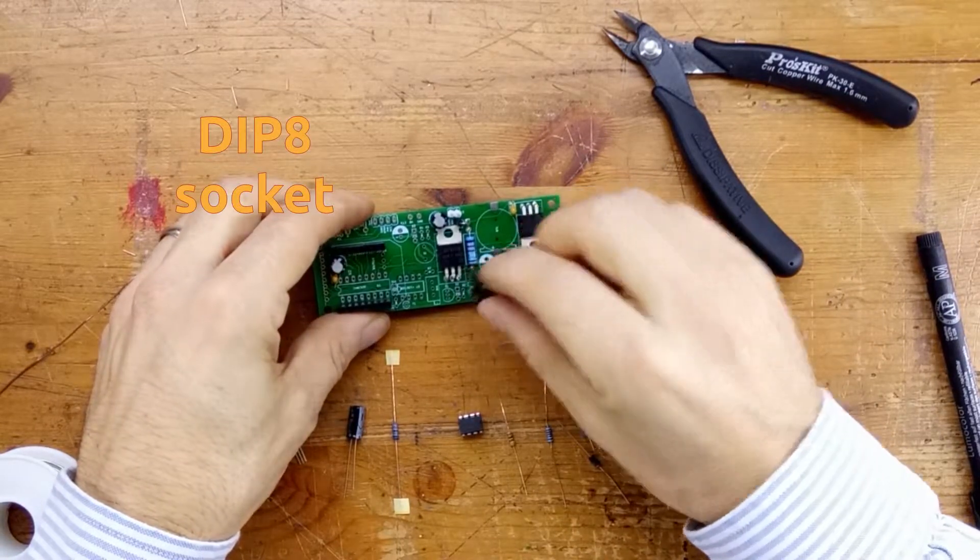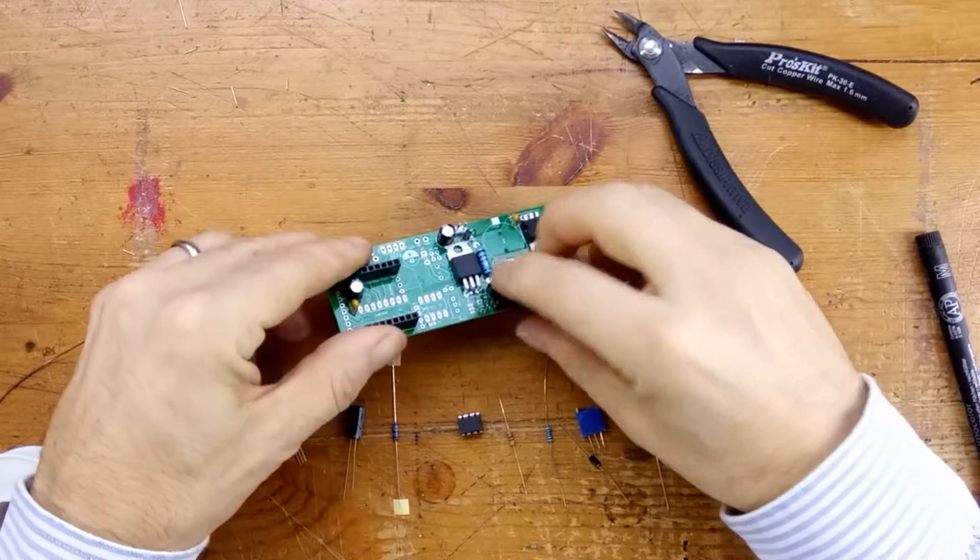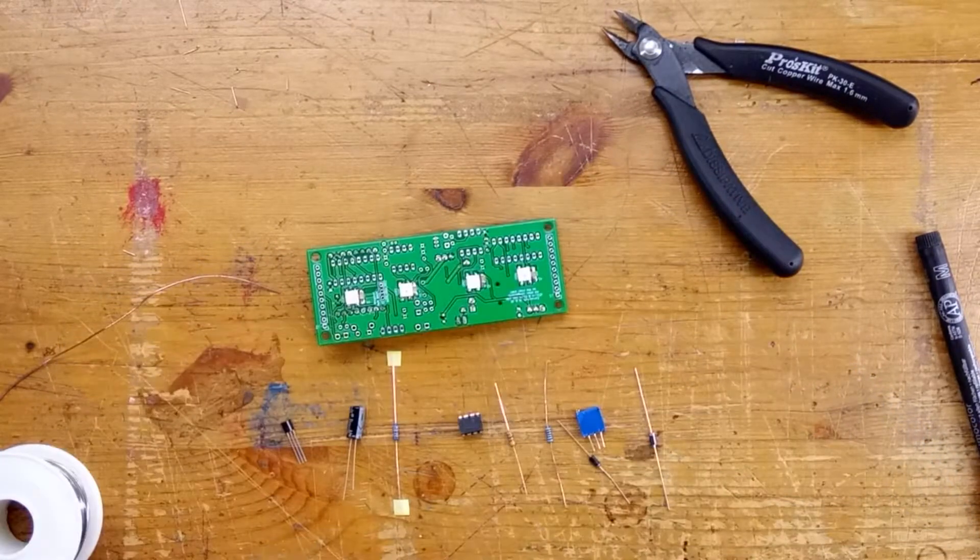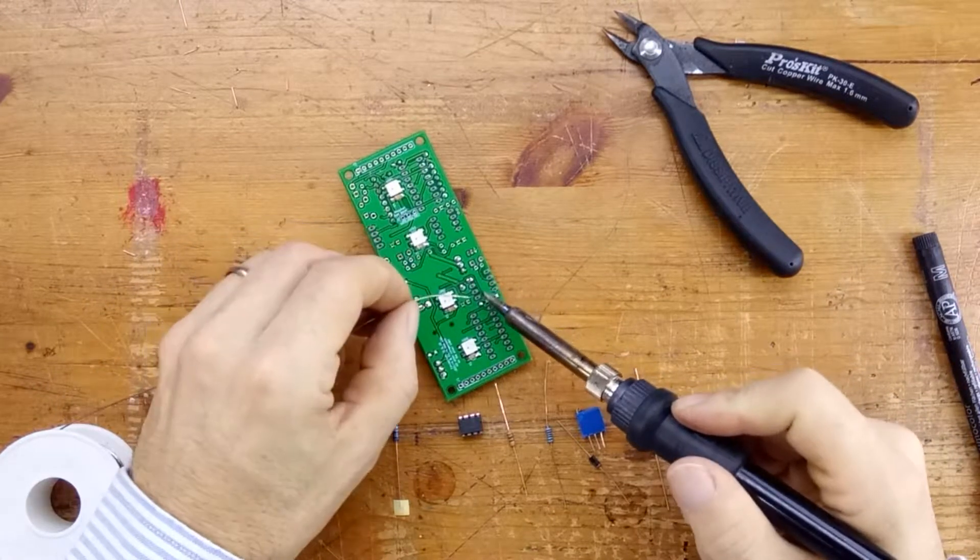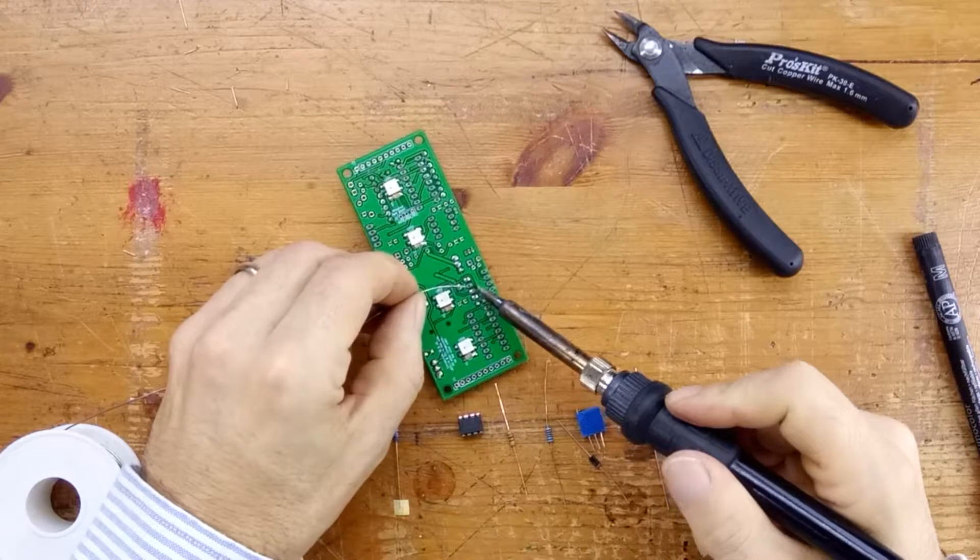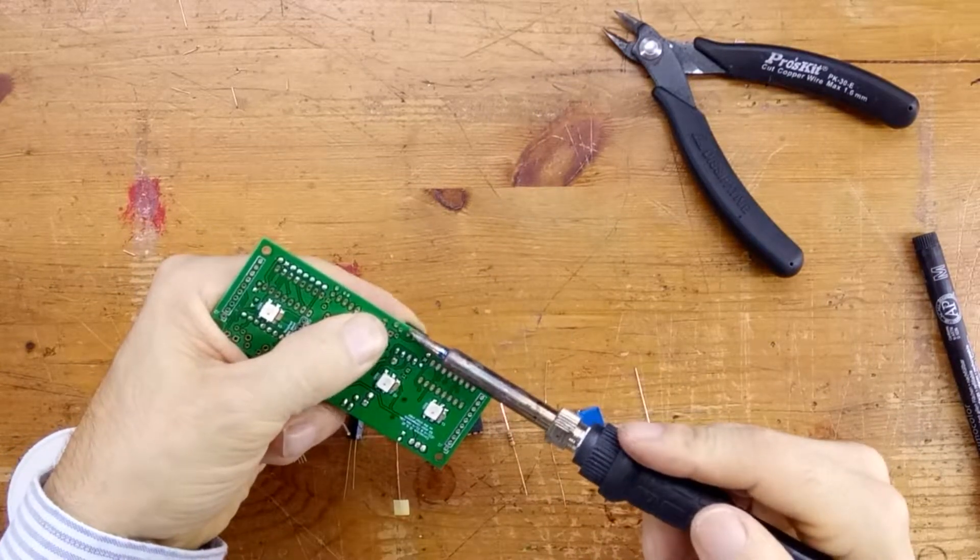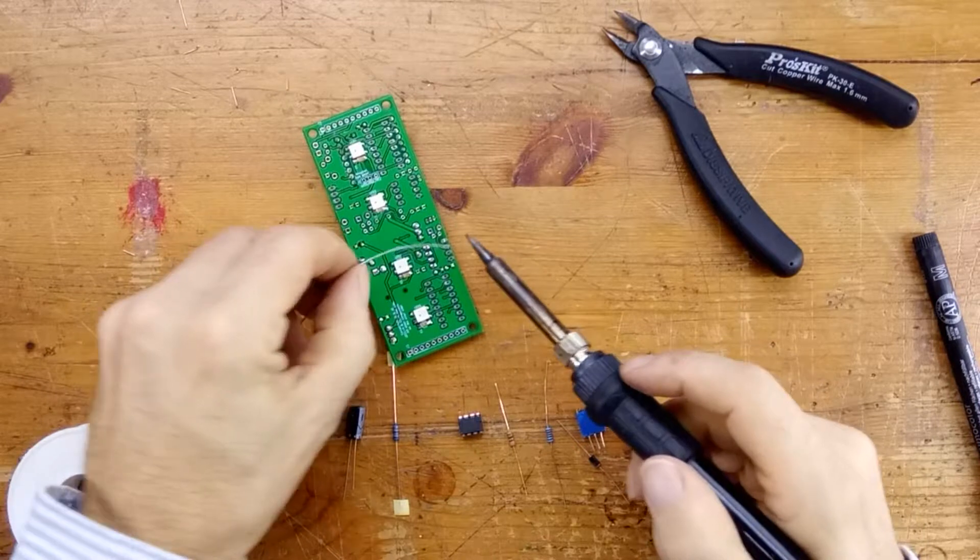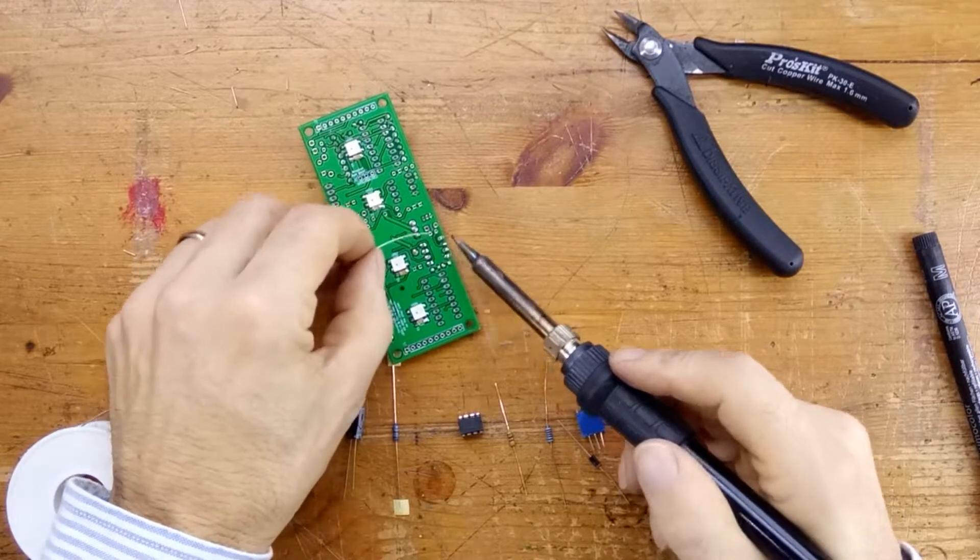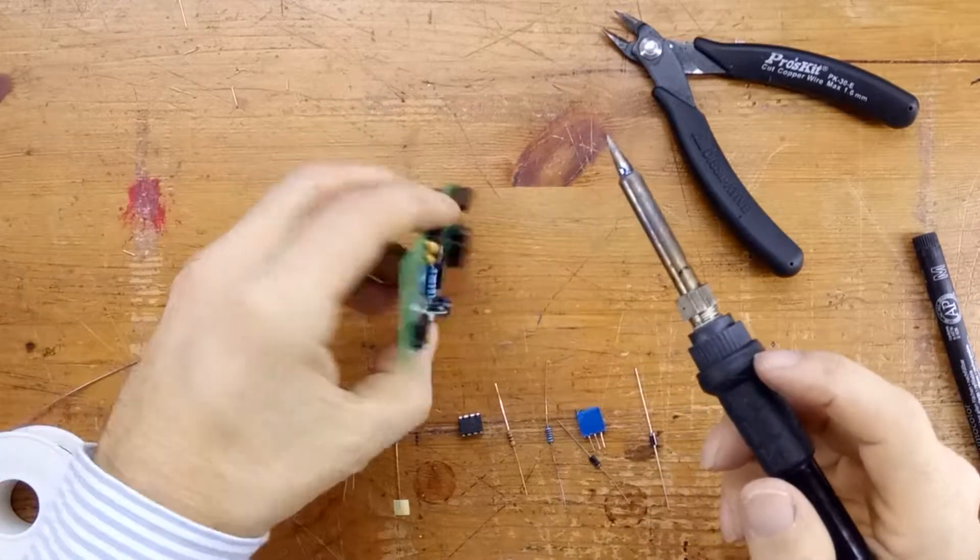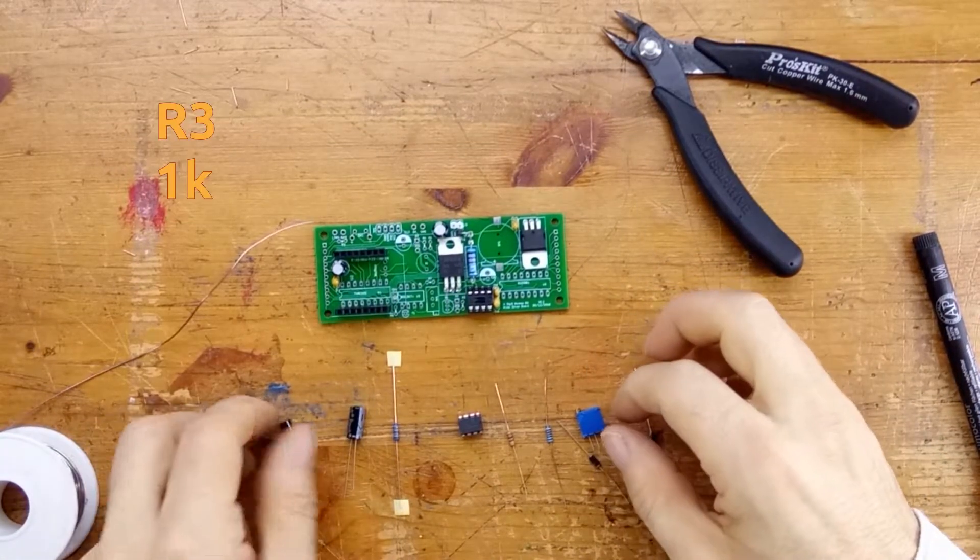Now we're going to put in the dip socket, the eight pin dip socket, and make sure that the notch on the socket lines up with the notch on the silk screen. This didn't need any tape, in my case. You might need to just tape it or blue tack it into place. I'm just soldering a couple of the pins. It looks like it's nearly okay. I'll press it in while I reflow the solder, and then we will solder the other six connections on the chip. We won't put the chip in there yet. We'll come back to that right at the very end.